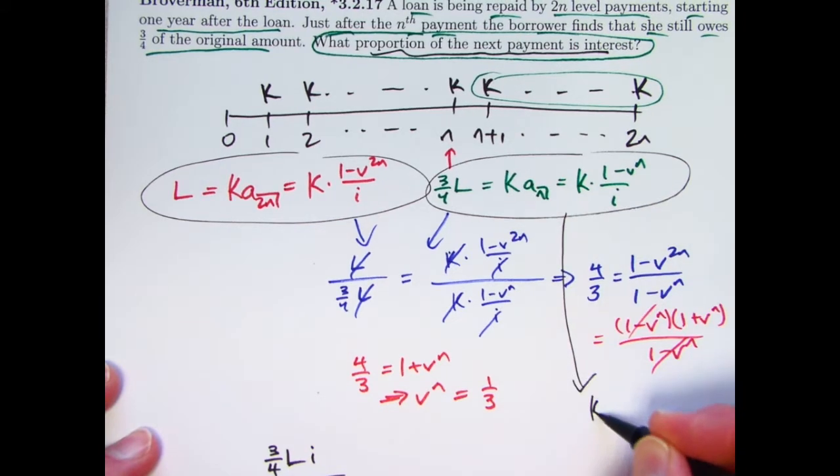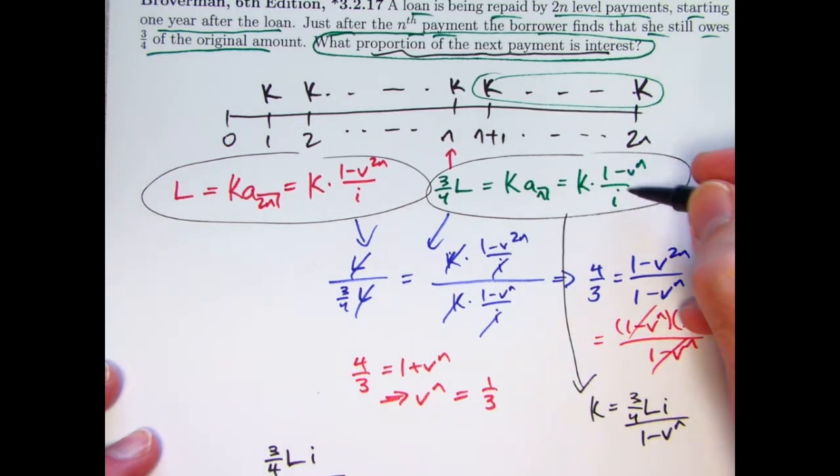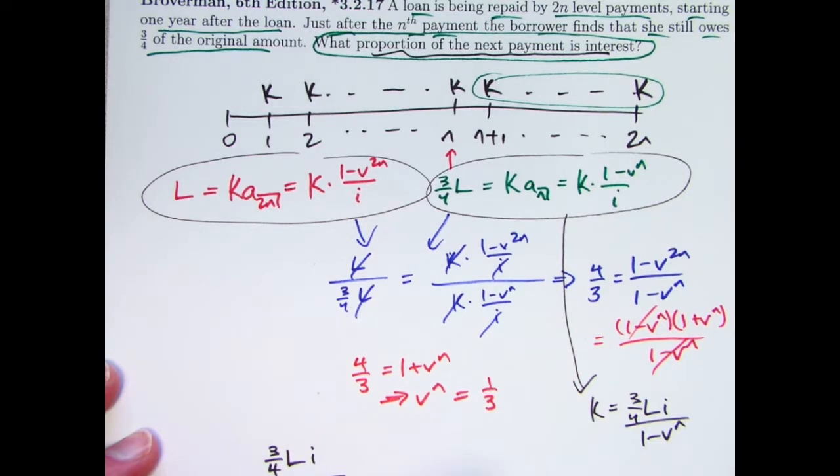I can write K as three-fourths L times i over (1 - V^N). Right? Multiply both sides by i, divide both sides by (1 - V^N). That's a way I can write what K is. I can bring that down here: three-fourths L times i over (1 - V^N).